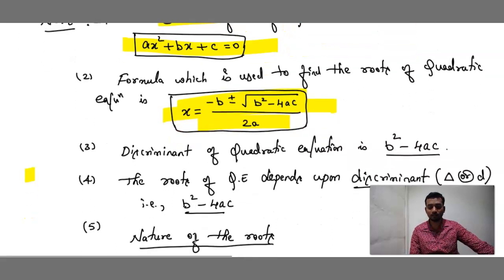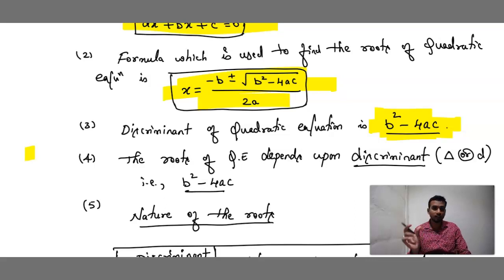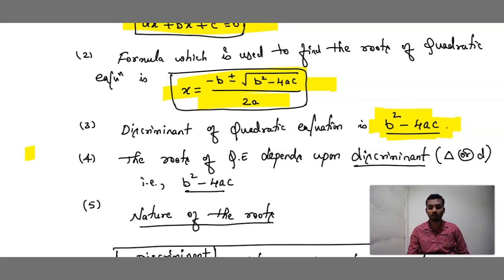Next topic is the discriminant. The discriminant of the quadratic equation is b² − 4ac. The roots of the quadratic equation depend upon the discriminant. Think of it like the heart — without the heart we cannot live; similarly, b² − 4ac is the heart of the quadratic equation. By substituting a, b, c values into b² − 4ac, this value will decide what the roots should be.